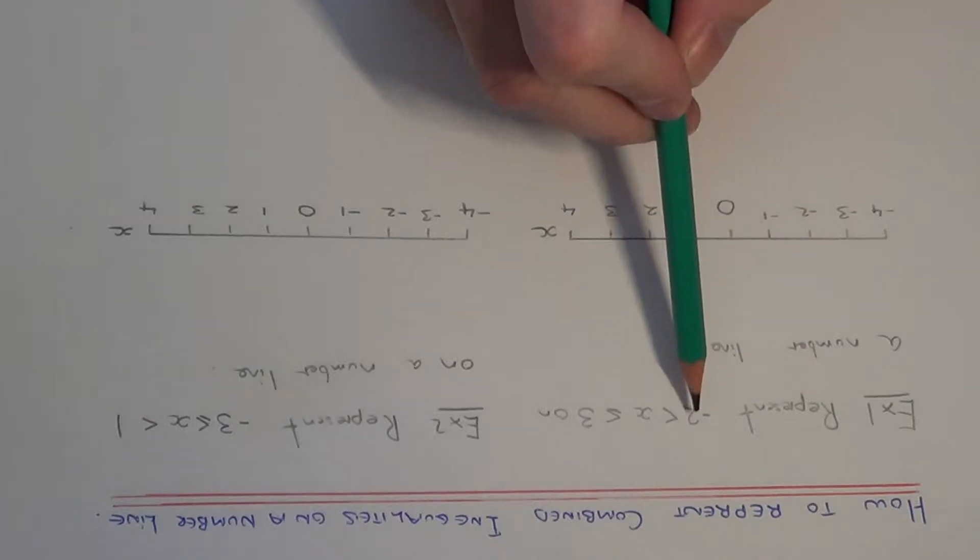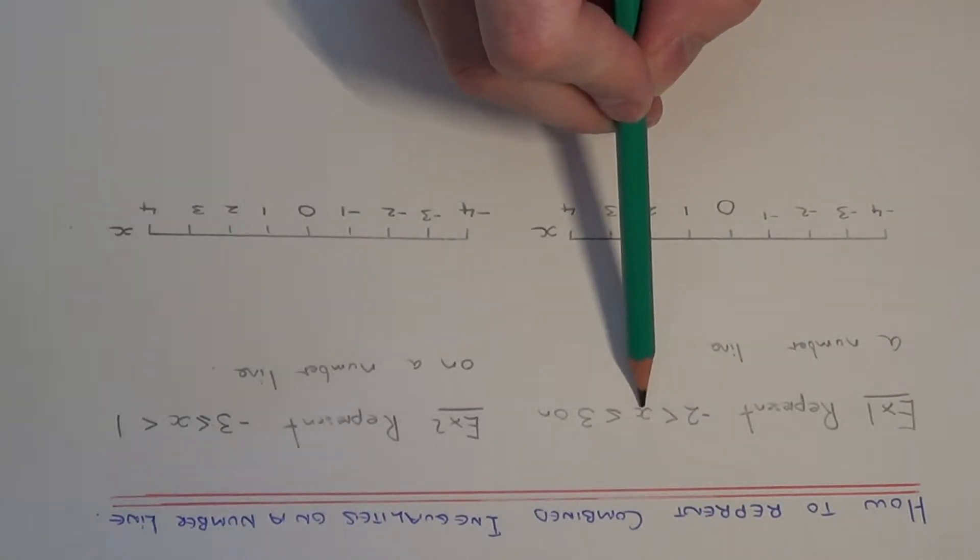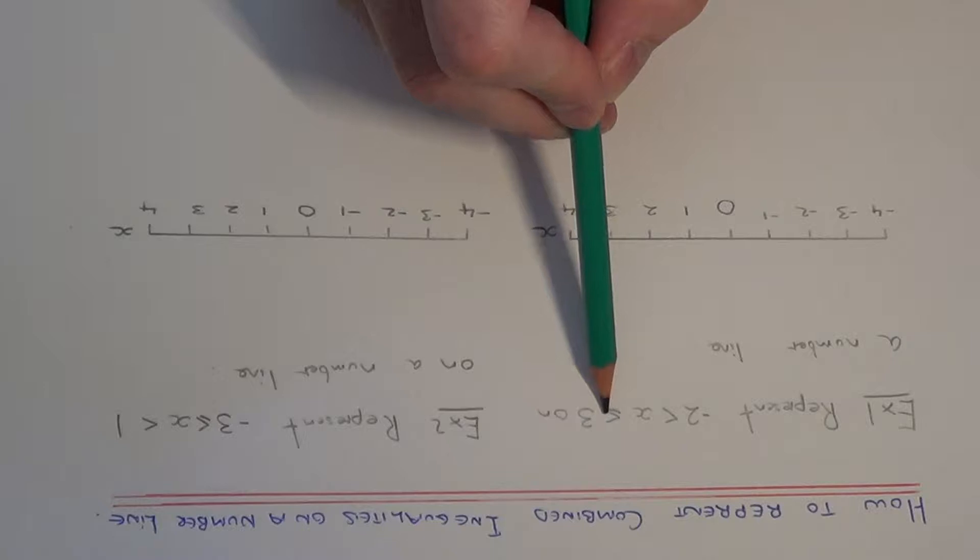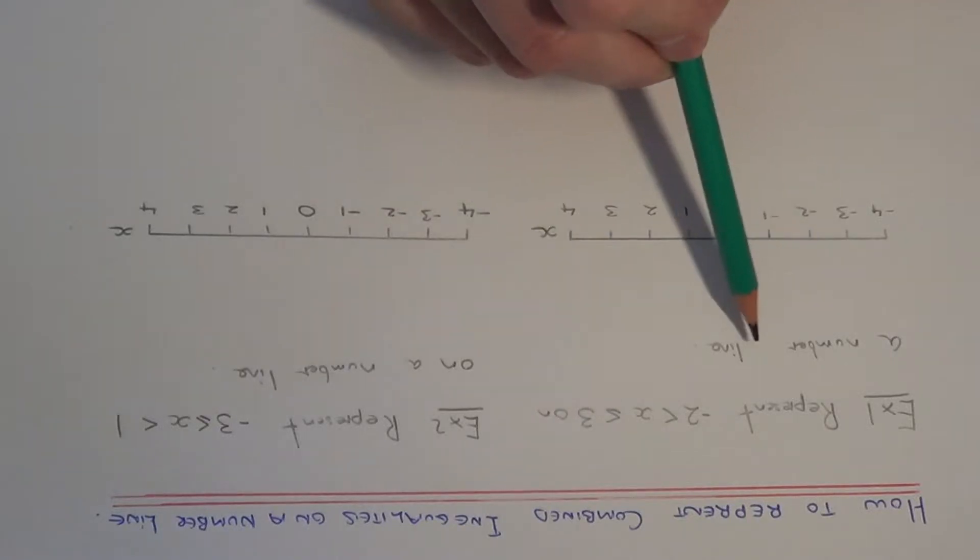We've got to represent minus 2 is less than x, less than or equal to 3 on a number line.